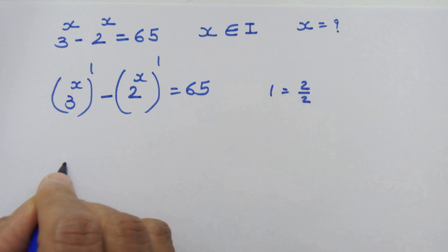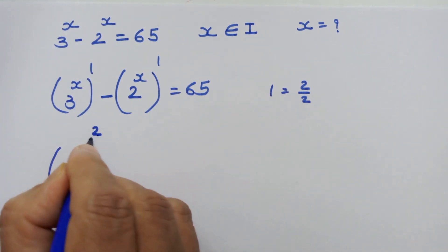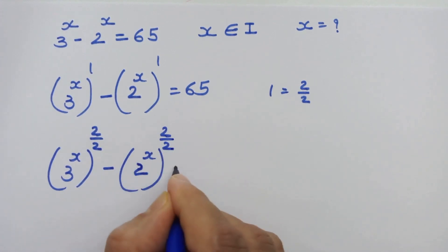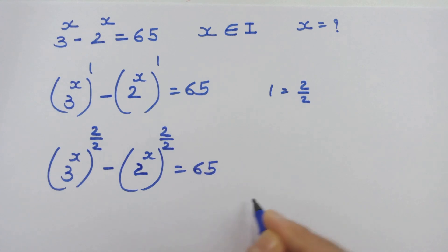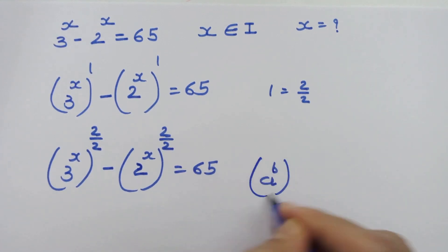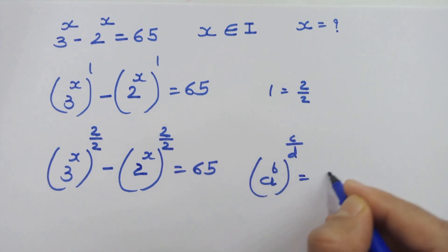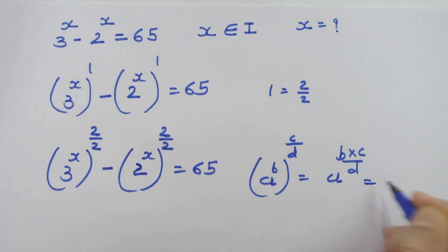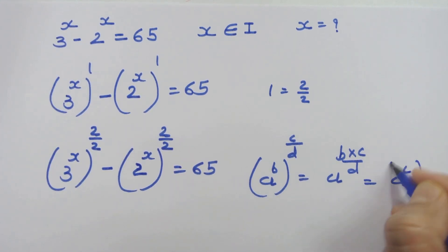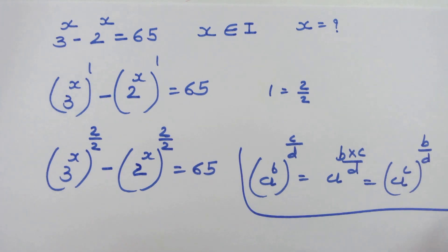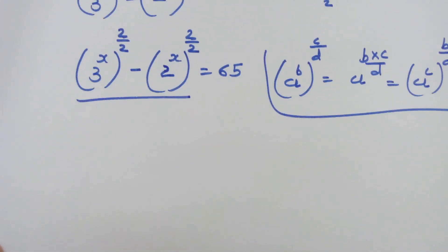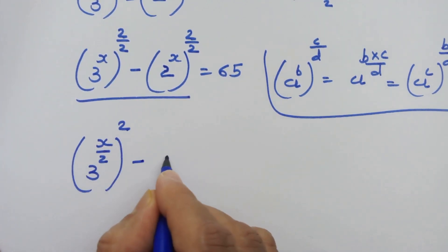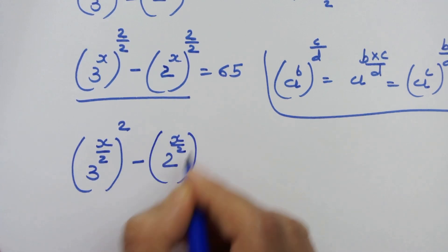So 3 raised to x whole raised to 2 upon 2, minus 2 raised to x whole raised to 2 upon 2, is equal to 65. Now if we have a raised to b, whole raised to c upon d, we can write it as a raised to b into c upon d, and also as a raised to c whole raised to b upon d. Using this rule, we can write 3 raised to x upon 2 whole square, minus 2 raised to x upon 2 whole square, is equal to 65.